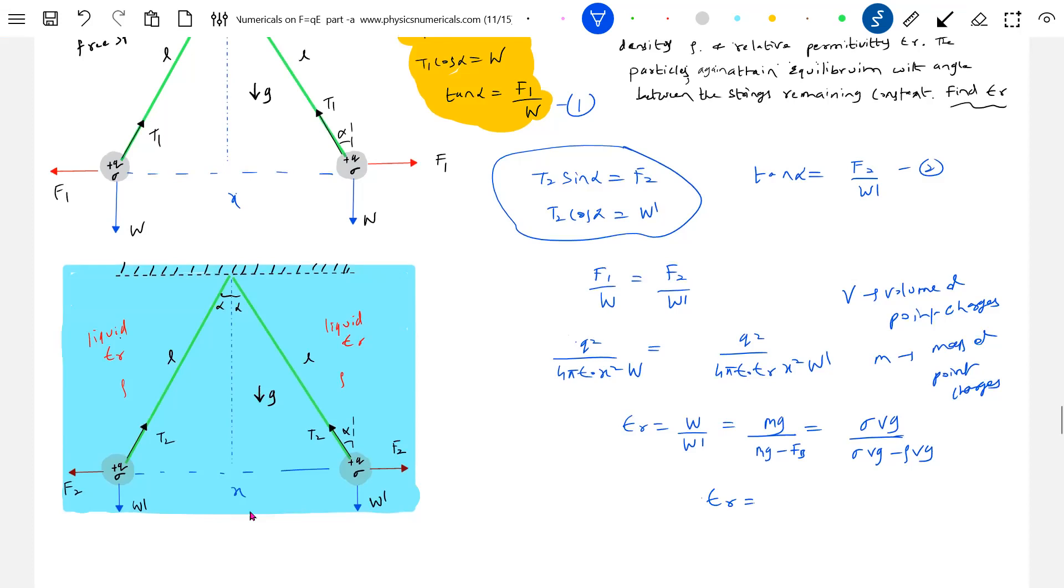So finally the expression for relative permittivity will be Sigma by... But then this, I think, will be very important. What is this quantity? It's the upward thrust or buoyant force. Sorry, this is upward thrust or buoyant force, relative permittivity of liquid. So I can measure very easily. I know the density of the charged particles.